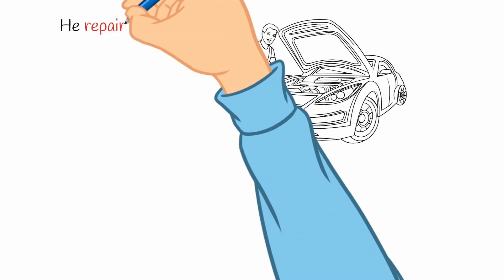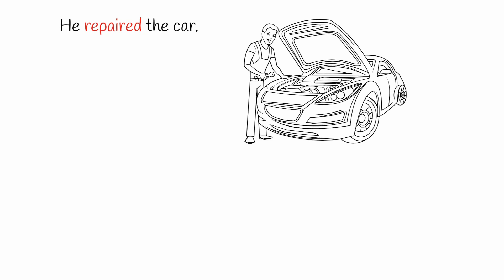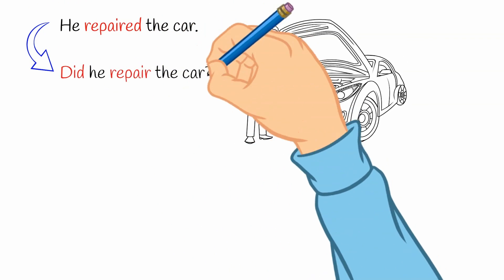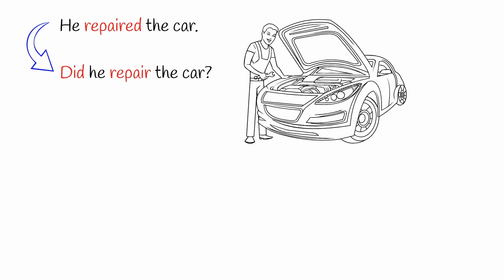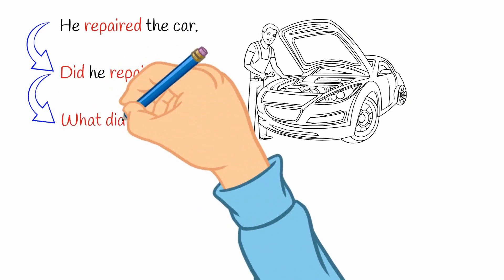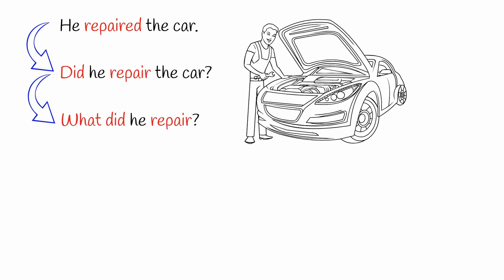Let's take a look at how all of these sentences change. For example, he repaired the car. This sentence is past tense because the verb uses ed. When we change it to a yes no question, we add did and change repaired to repair. If we didn't know what he repaired, we would ask what did he repair? Adding what to the front, keeping did and using the regular verb.